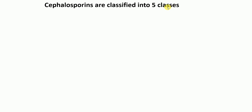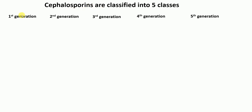Cephalosporins are classified into five different classes. The mnemonics and the tricks to learn the drugs involved in each of the classes is what I'm going to discuss here. The five different classes are: first generation, second generation, third generation, fourth generation, and fifth generation cephalosporins.